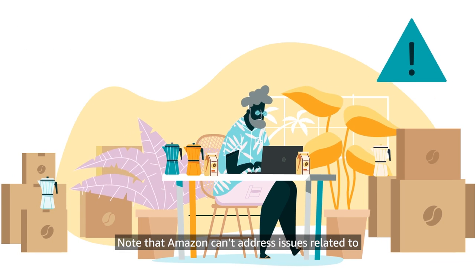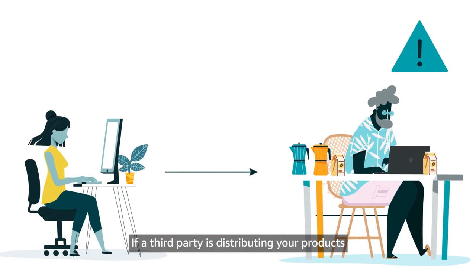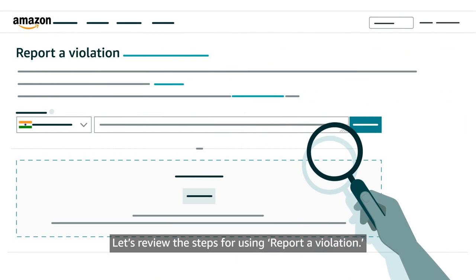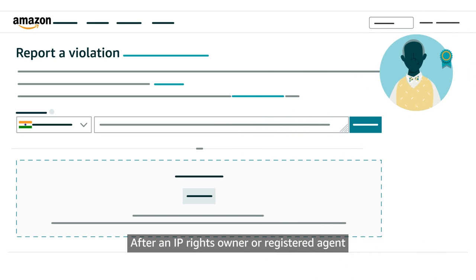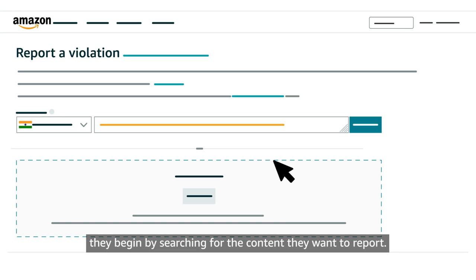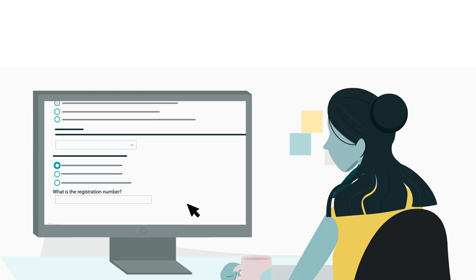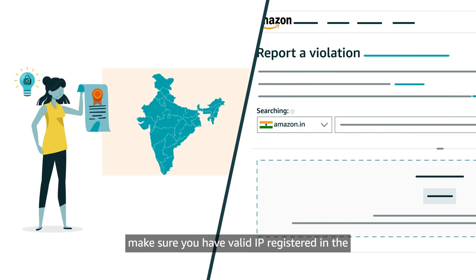Note that Amazon can't address issues related to unauthorized distribution of a product. If a third party is distributing your products without permission, contact them directly. Let's review the steps for using Report a Violation. After an IP rights owner or registered agent for an enrolled brand accesses this form, they begin by searching for the content they want to report. First, use the drop-down menu next to the search bar to select the Amazon store you want to search in. For any infringement report that requires an IP registration number, make sure you have valid IP registered in the same jurisdiction as the store you select.